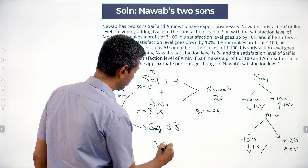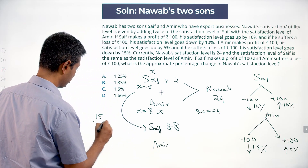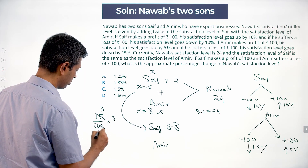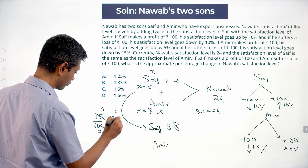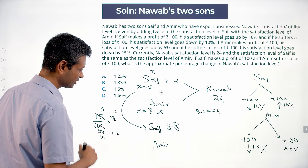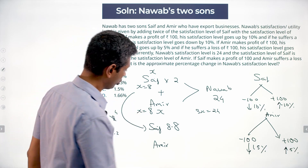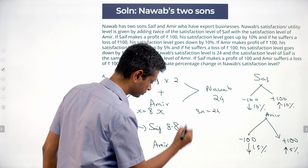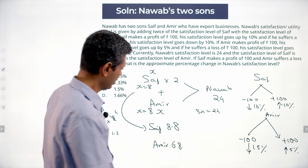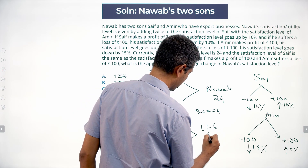Ameer is down 15%. What is 15% of 8? That is 15/100 × 8 = 3/20 × 8 = 1.2. He's down 1.2; he started at 8, so down 1.2 takes him to 6.8. Now Nawab's satisfaction is 8.8 × 2 = 17.6, plus 6.8.